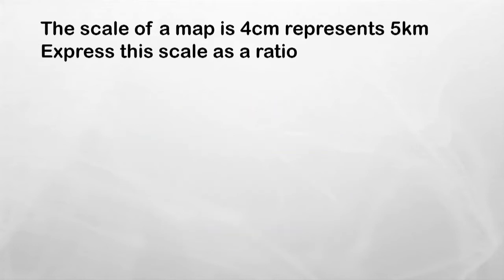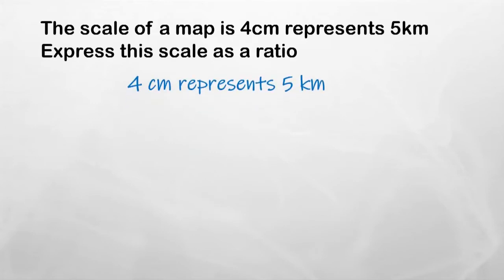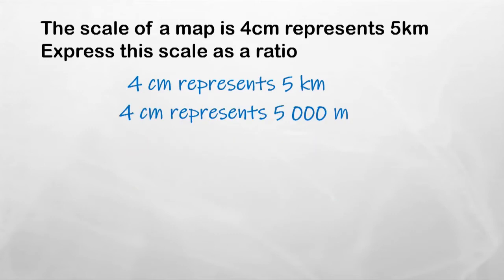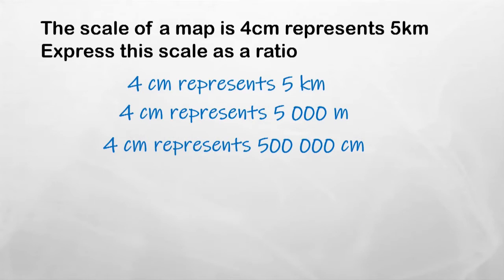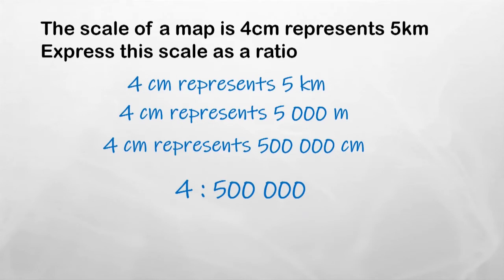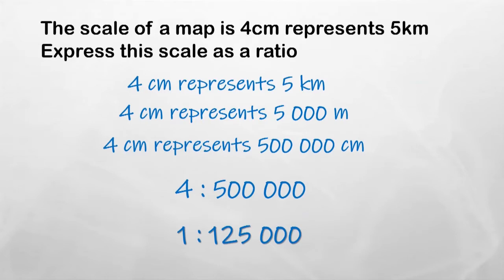Let's try another question. The scale of this map is four centimetres represents five kilometres. Writing it down: four centimetres represents five kilometres. Changing kilometres to metres by multiplying by a thousand, then metres to centimetres by multiplying by a hundred, gives both measurements in the same units. Dropping the units and writing as a ratio gives four to 500,000, but that's not in its lowest terms — both sides share a common factor of four. Dividing both sides by four gives one to 125,000.